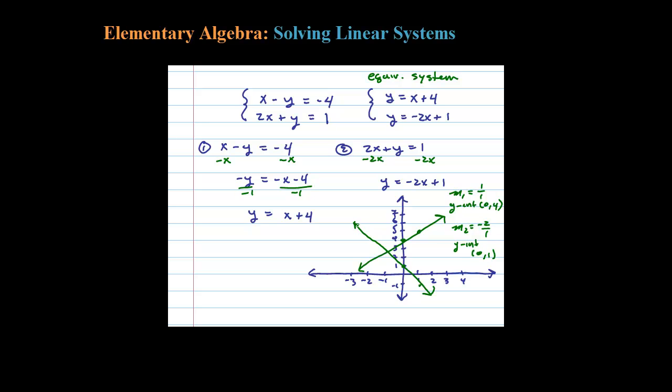We're looking for actually the point where they cross. So I'm looking right here and it appears on my graph that they're crossing at negative 1 comma 3.